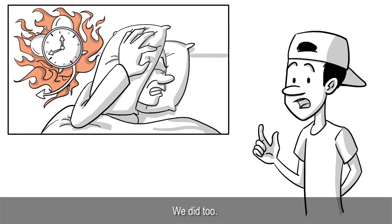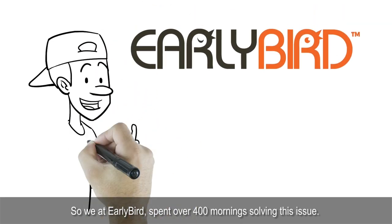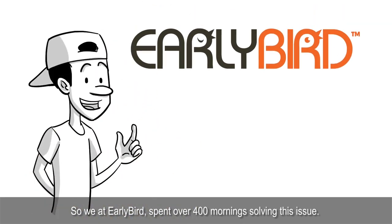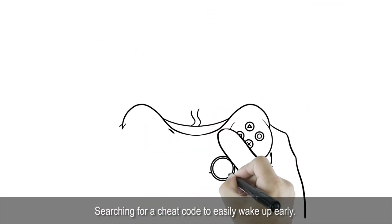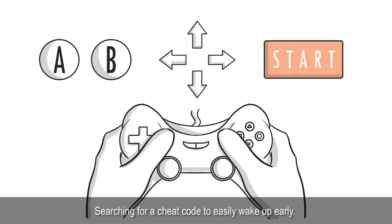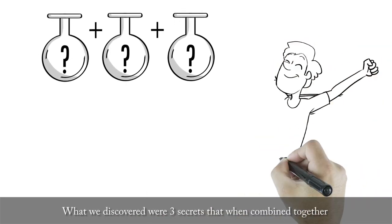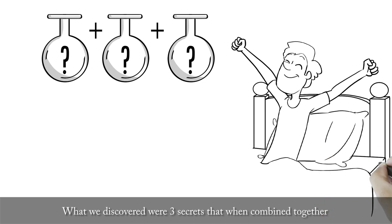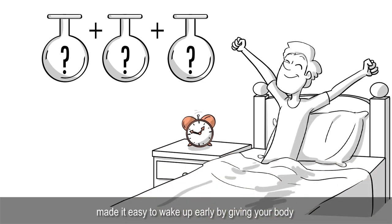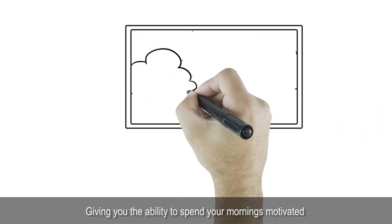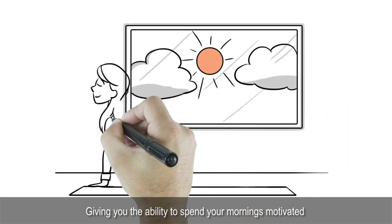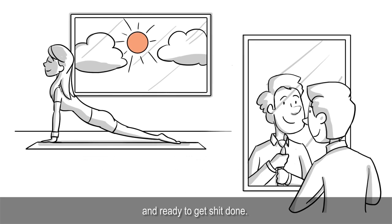We did too. So we at Early Bird spent over 400 mornings solving this issue, searching for a cheat code to easily wake up early. What we discovered were three secrets that when combined together made it easy to wake up early by giving your body and brain exactly what they need, giving you the ability to spend your mornings motivated and ready to get shit done.